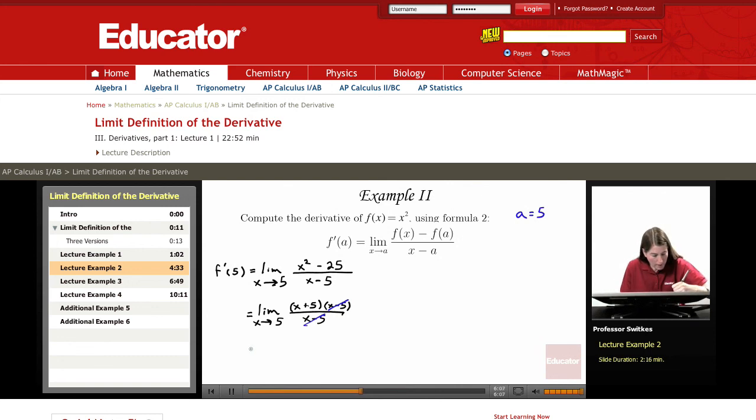We have left the limit as x approaches 5 of x + 5. As x approaches 5, x + 5 approaches 10. So once again, f'(5) = 10.